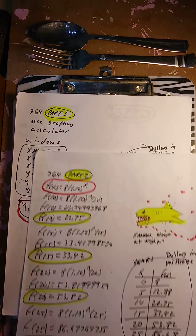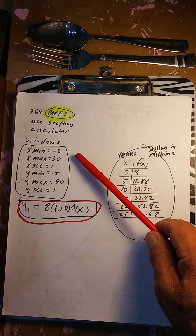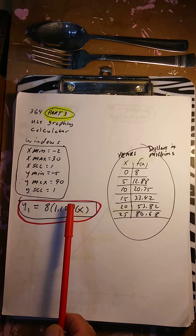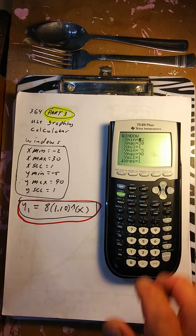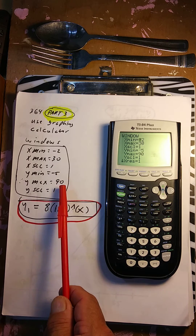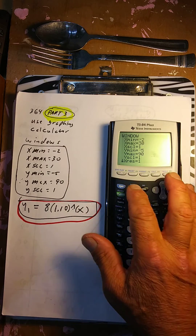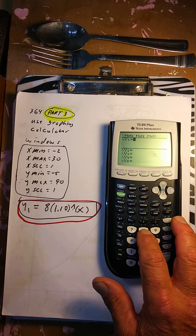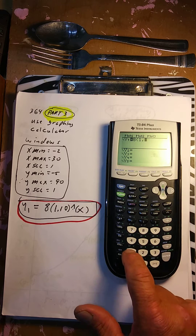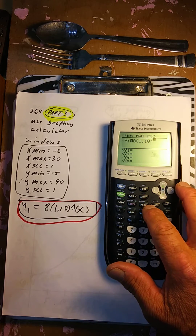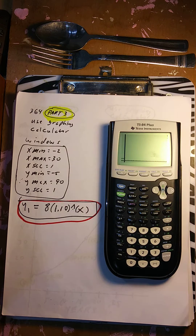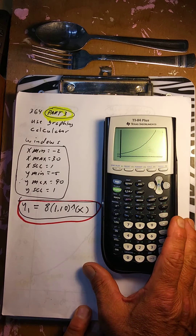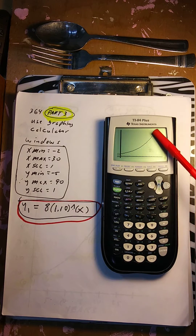I'm going to use the graphing calculator. Part 3 — use the graphing calculator. This is how you set up the windows. I'll set up the windows for you: negative 2, 30, 1, negative 5, 90, and 1. All these numbers match. I'm going to put in y: 8 parentheses 1.10 to the power of x. Hit enter. There is the function. Hit graph and it's going to draw the graph. There it is — an exponential growing function.